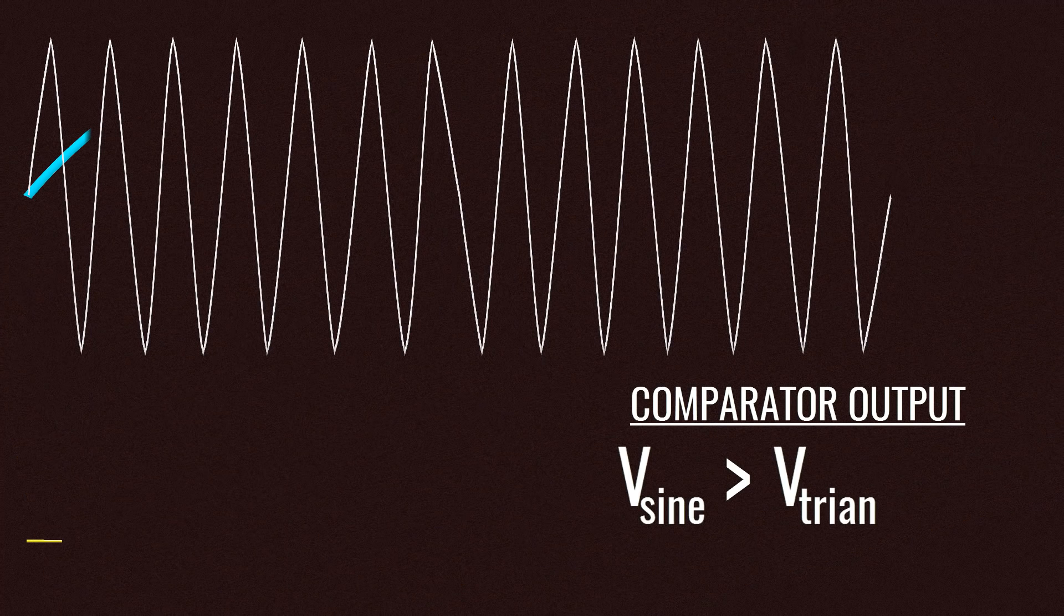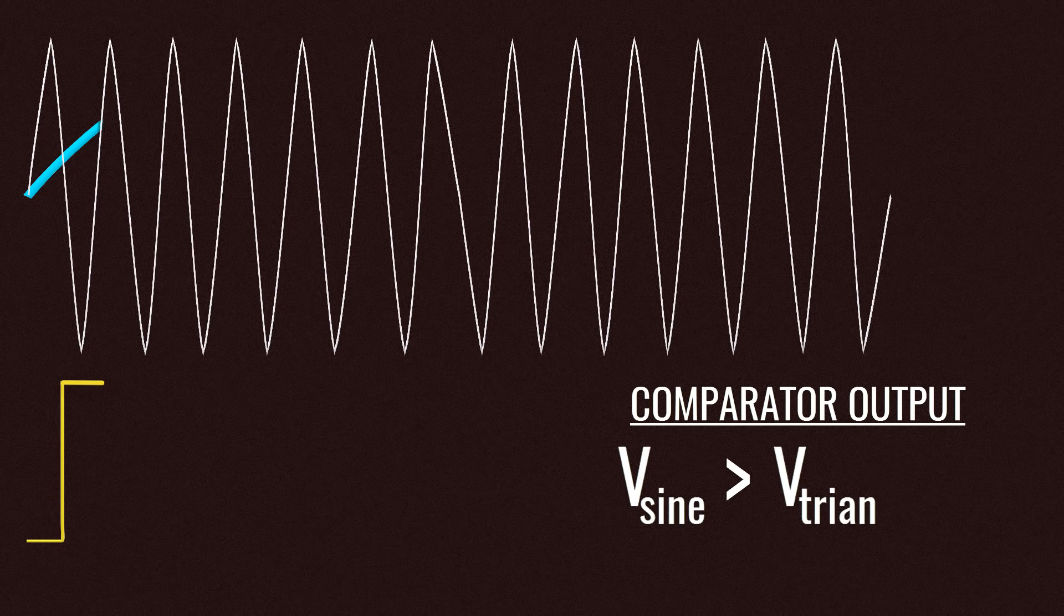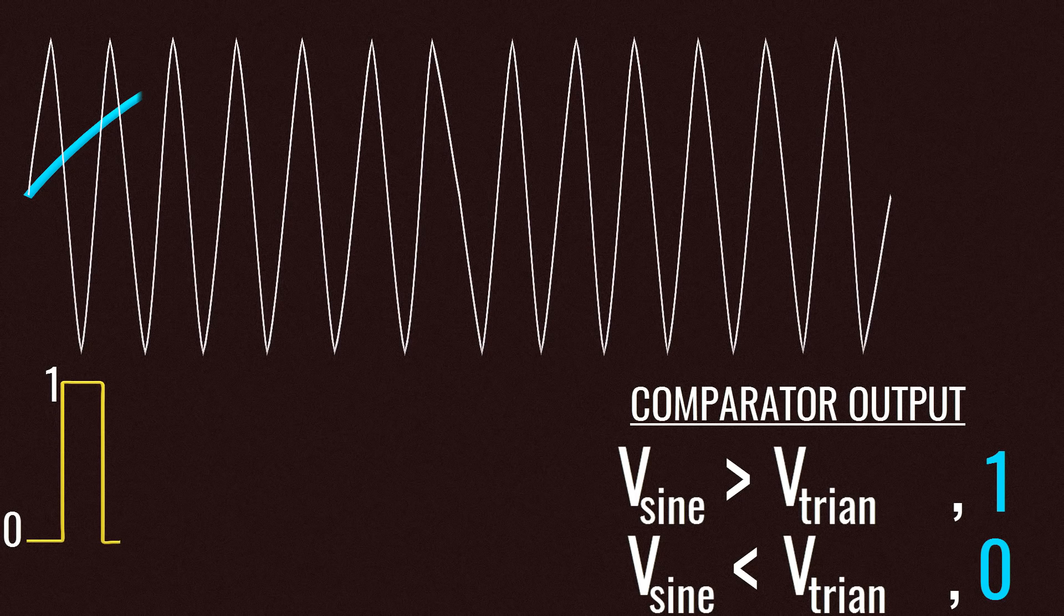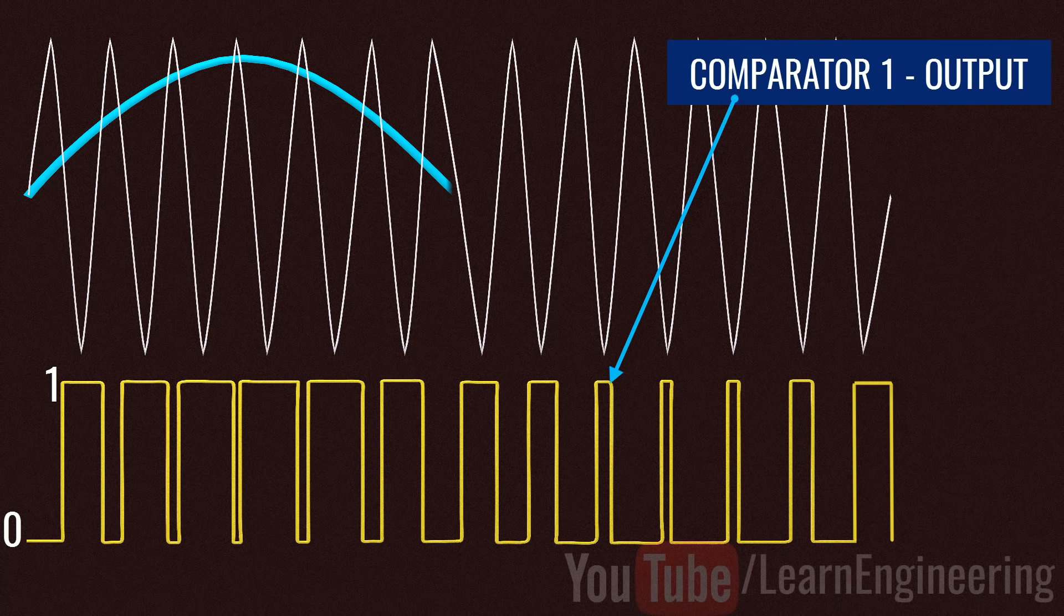The switching logic of PWM is simple. When the sine wave value is more than the triangular wave, comparator produces one signal, otherwise zero signal. Now, observe voltage variation at first comparator according to this logic.